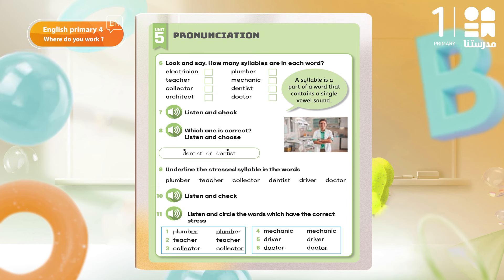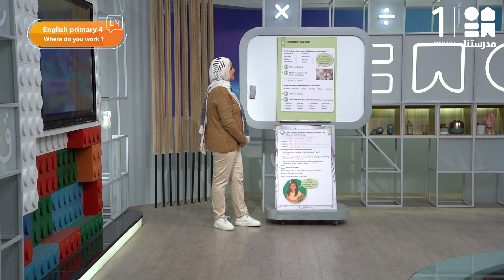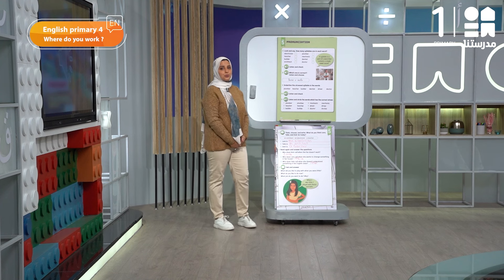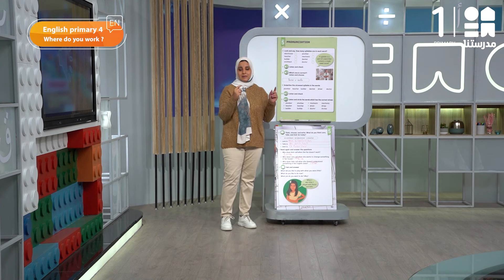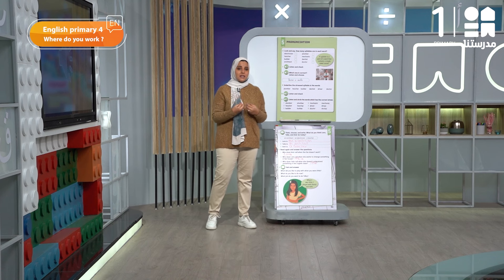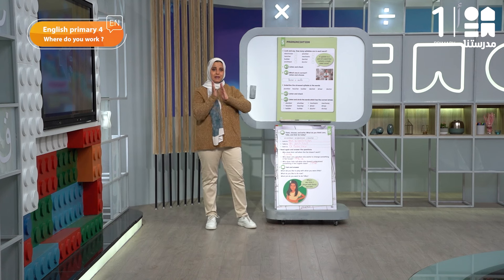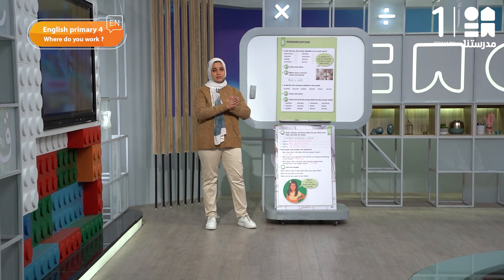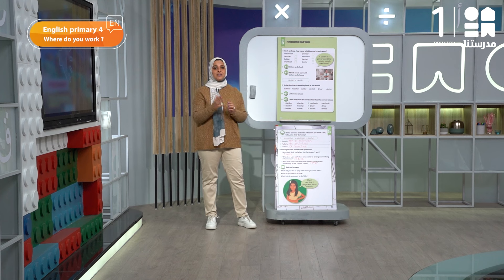This activity is called pronunciation. Question number six: look and say — how many syllables are in each word? Before we answer, we need to know what a syllable is. A syllable means I divide the word into parts according to the vowels in the word. The vowels are: a, e, i, o, and u.